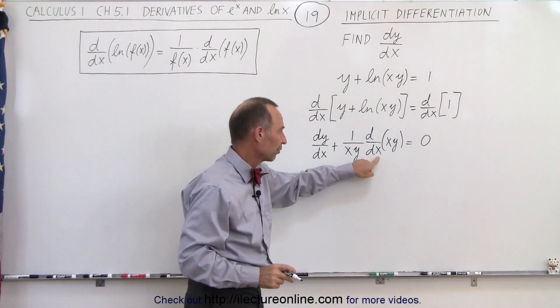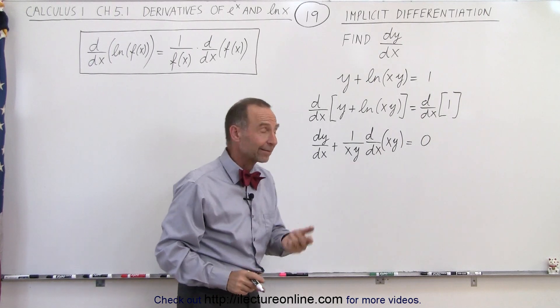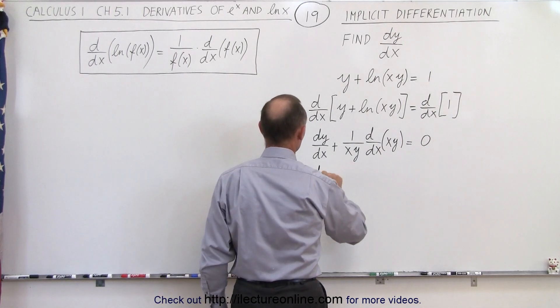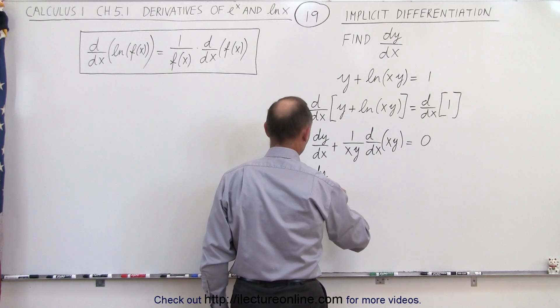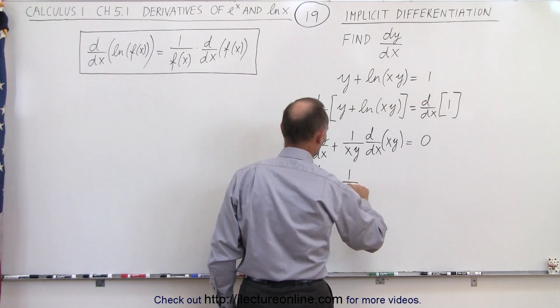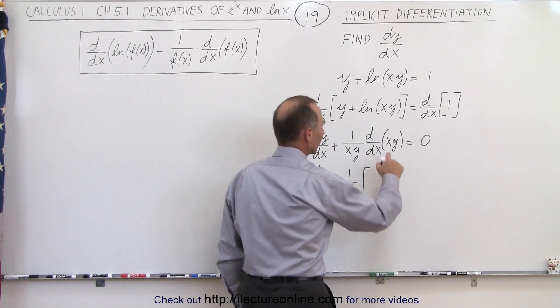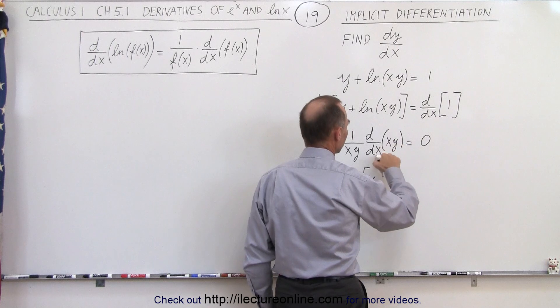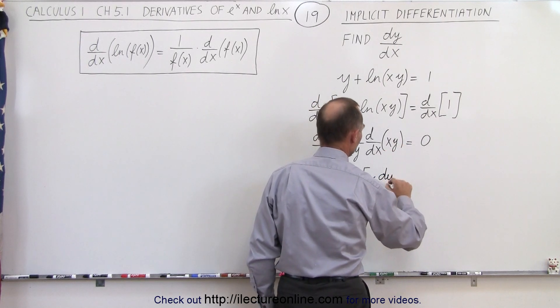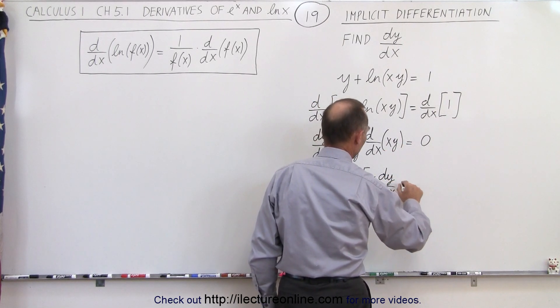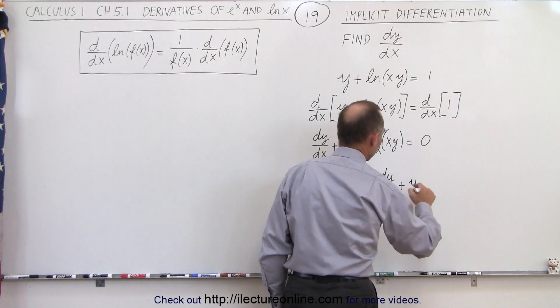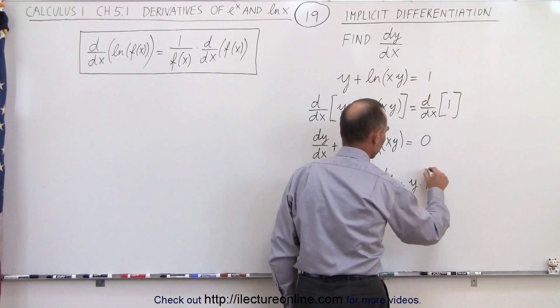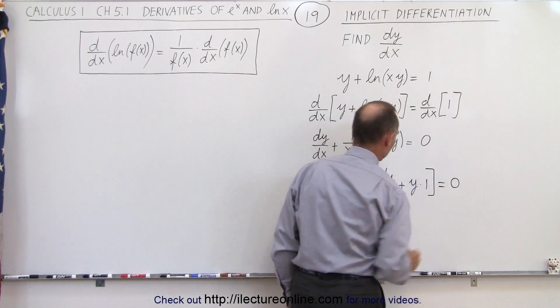So now we need to find the derivative with respect to x of that product x times y. So there we're going to use the product rule. So we end up with dy/dx plus 1 over xy times, we take the first, which is x, times the derivative of the second with respect to x, which is dy/dx, plus the second, which is y, times the derivative of the first with respect to x, which is simply equal to 1. And that is equal to 0.